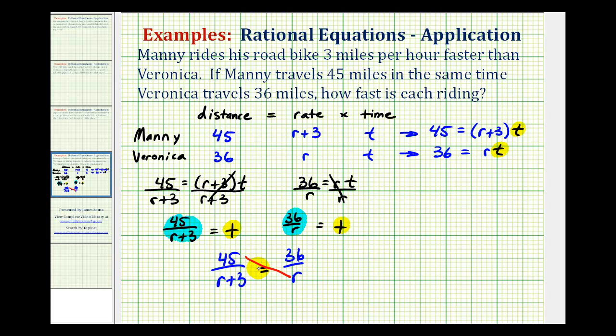45 times r must equal the quantity r plus three times 36. So 45 times r, or 45r, must equal 36 times the quantity r plus three.